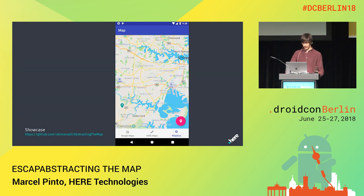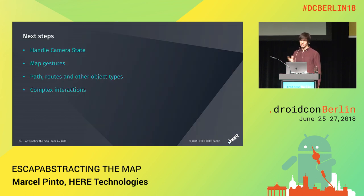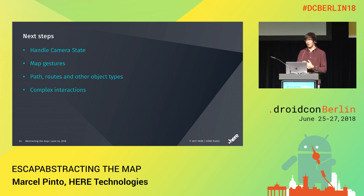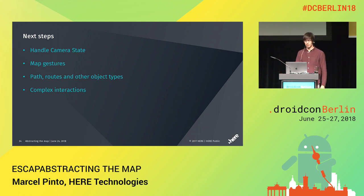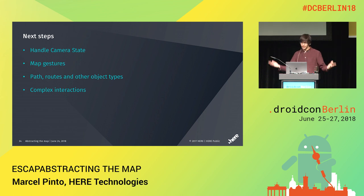So that's it. We just covered the basics here — how the map and the markers work — but maps have a lot more to them. Maps are complex: you have camera states, map gestures, complex items like polylines and routes, and maybe complex interaction with the map. So there is still a lot to cover, but we just need to apply the same principles we have seen here. The important part is having this abstraction from the rest of your code so it keeps things clean. Thank you everyone, I hope you enjoyed it.